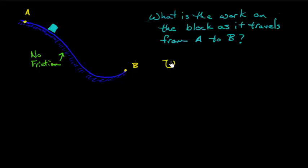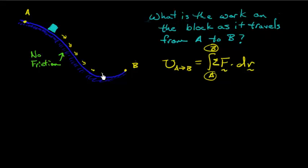By definition this work I can write as follows. It's a definite integral of the force dot product with dr, or the sum of all the forces acting on the block dot product with dr, where dr is just this little tiny incremental change in position. As we go down the ramp, dr is following the block and pointing in the direction of travel.